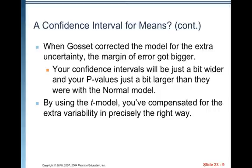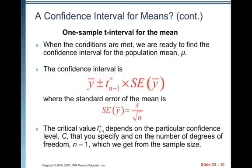By the t model, you've compensated for the extra variability in precisely the right way. When the conditions are met, we are ready to find the confidence interval for the population mean mu. The confidence interval is y-bar plus or minus t* with N minus 1 degrees of freedom times the standard error of y-bar, where the standard error equals s over square root of N. The critical value t* depends on the particular confidence level C you specify and on the degrees of freedom N minus 1.